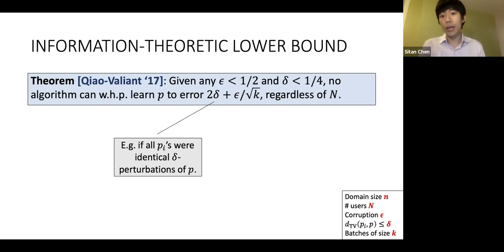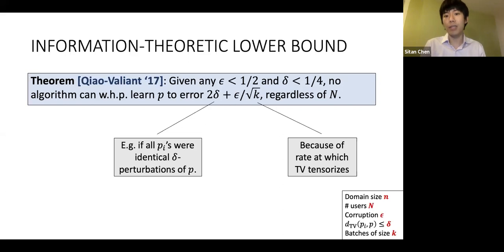Where does the √k come from? This just comes from the rate at which TV tensorizes. In the domain size 2 case, if I had a Bernoulli(1/2 - c) and wanted to compare it to Bernoulli(1/2 + c), if I take k IID draws from both to form binomial distributions, the TV between the binomial distributions becomes c√k, roughly.